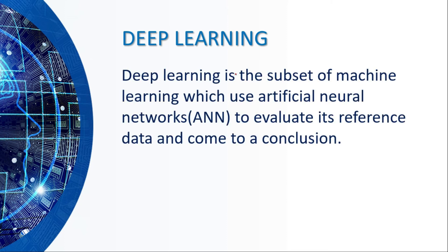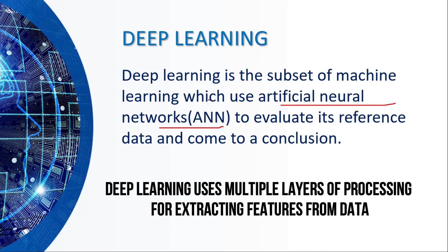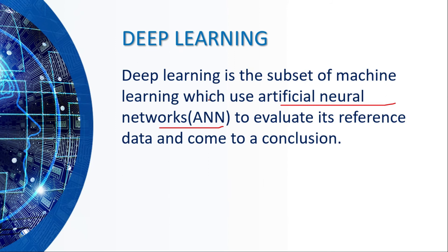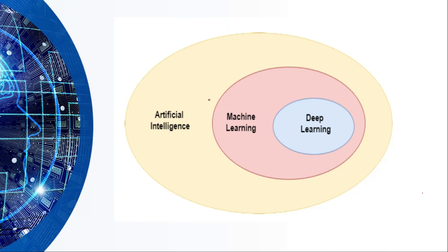Deep learning is actually a subset of machine learning which uses artificial neural networks. Artificial neural networks are a set of mathematical functions that can be trained to collectively learn more complex functions. An artificial neural network works like a human brain. Deep learning tries to mimic human behavior. It is widely used in image recognition, speech recognition, and other types of processing.